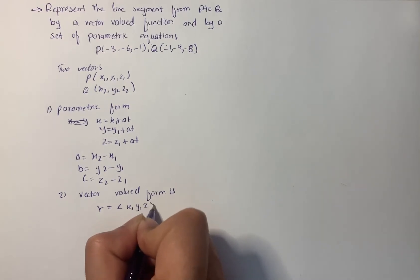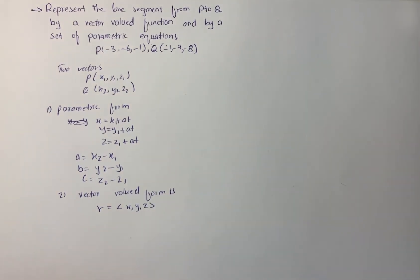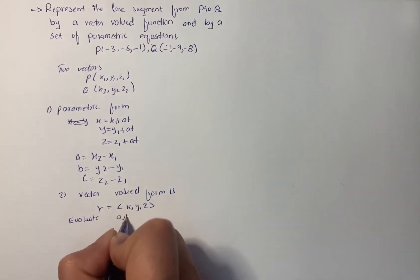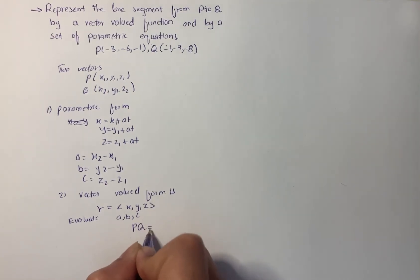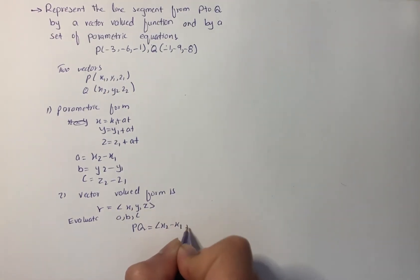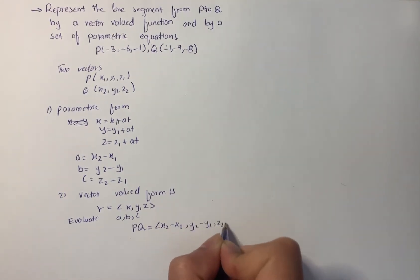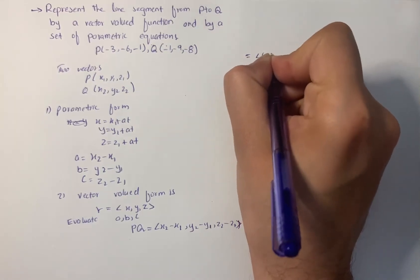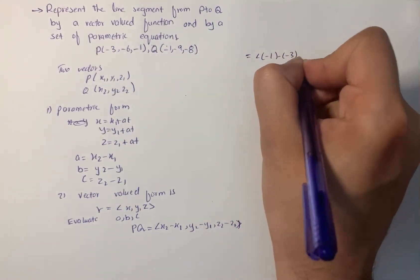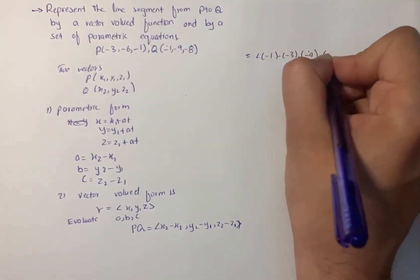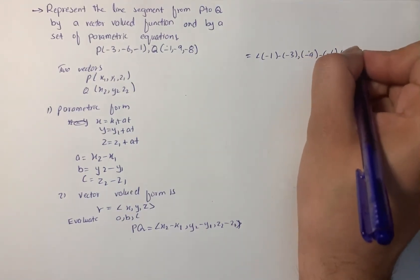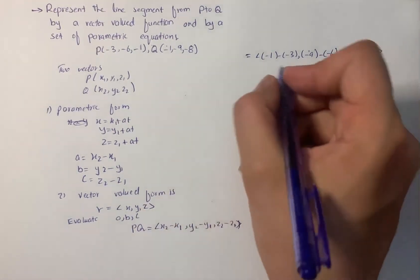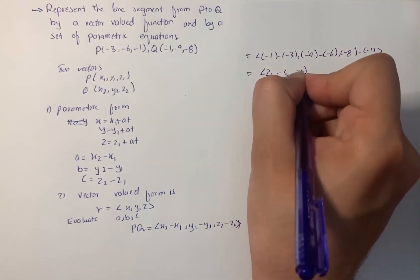The vector-valued form is r = (x, y, z). Now we evaluate a, b, and c. We have PQ = (x2 - x1, y2 - y1, z2 - z1). Substituting values: (-1 - (-3), -9 - (-6), -8 - (-1)), which gives us (2, -3, -7).